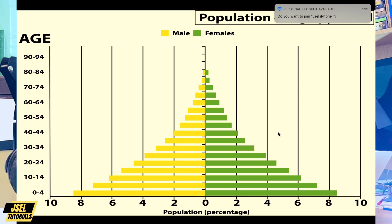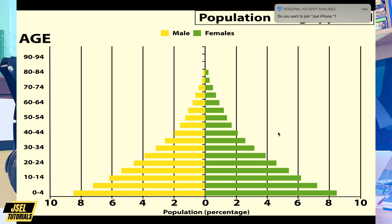People use this to compare the differences between male and female populations of an area. You can see the number of dependents — children and elderly people. The pyramid basically displays the age structure, and you can represent the age groups on the graph; on the left side of the screen you see the age axis.